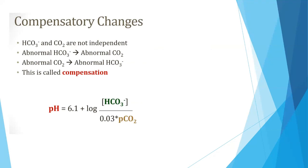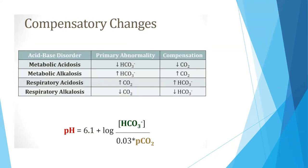Regarding compensatory changes: bicarbonate and CO2 are not independent. If there is an abnormal bicarbonate, there will be an abnormal CO2, and vice versa — this is called compensation. In metabolic acidosis with decreased bicarbonate, the body compensates by also decreasing CO2. In metabolic alkalosis with increased bicarbonate, the body increases pCO2. In respiratory acidosis with increased pCO2, the body increases bicarbonate. If CO2 decreases, the body also decreases bicarbonate.